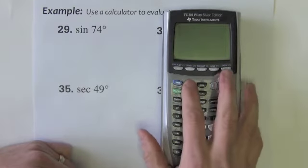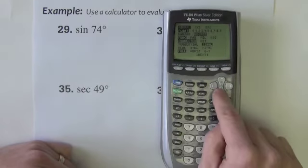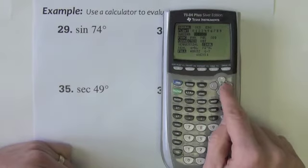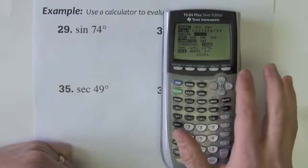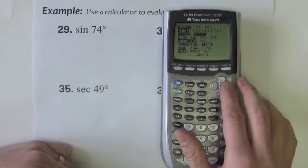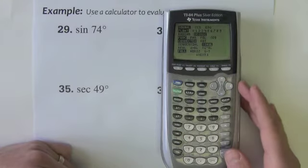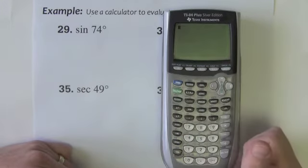I have to make sure my calculator is in degree mode first off. So the mode button right here on the top very near the top. The third one down you have the option of choosing between radian or degree. If you've never done anything with your calculator before it's probably defaulted.